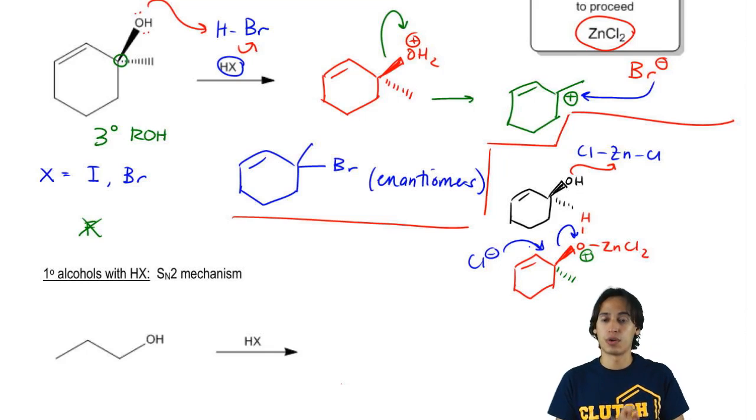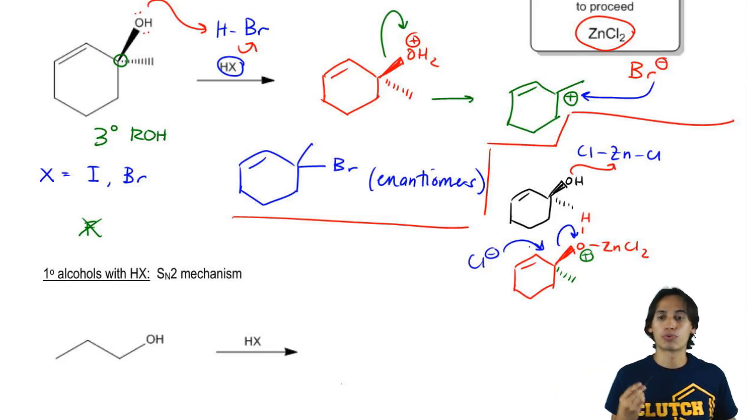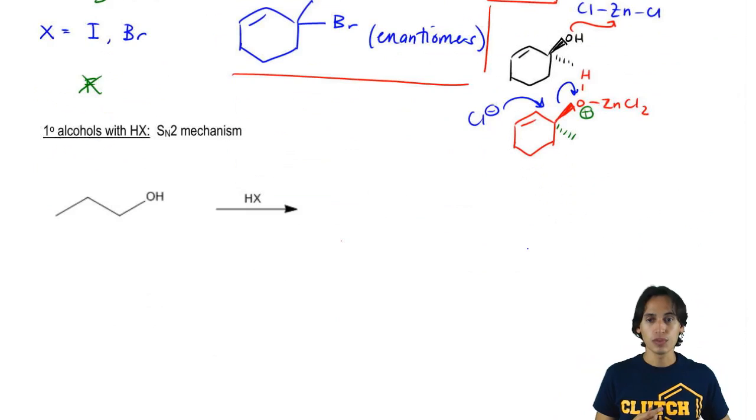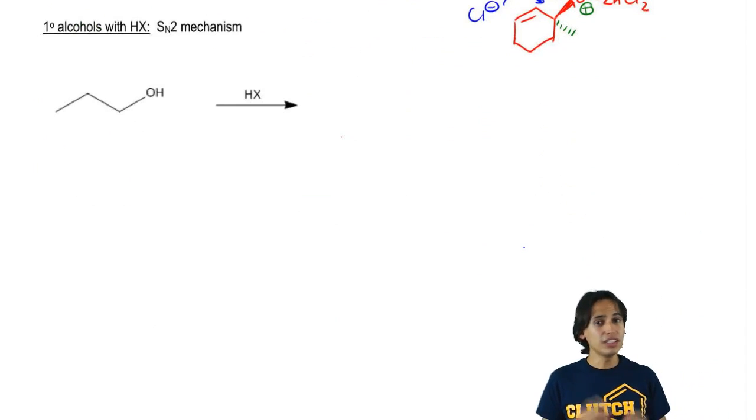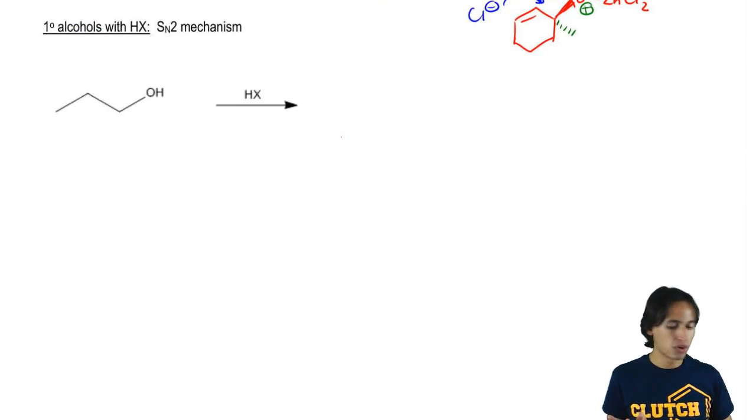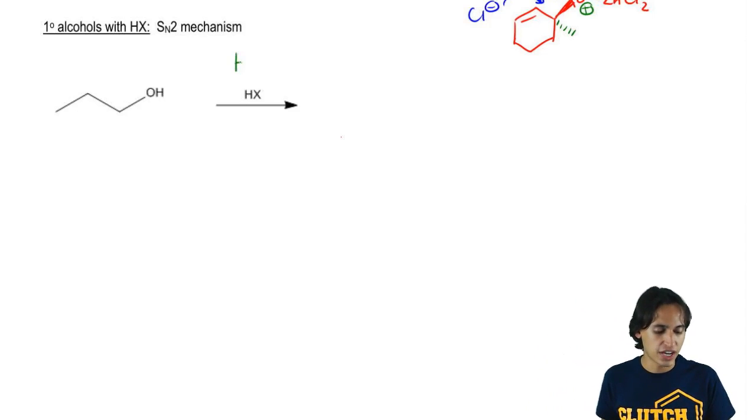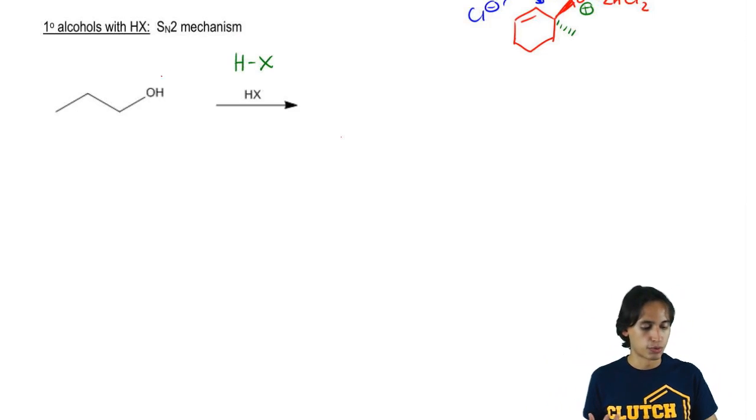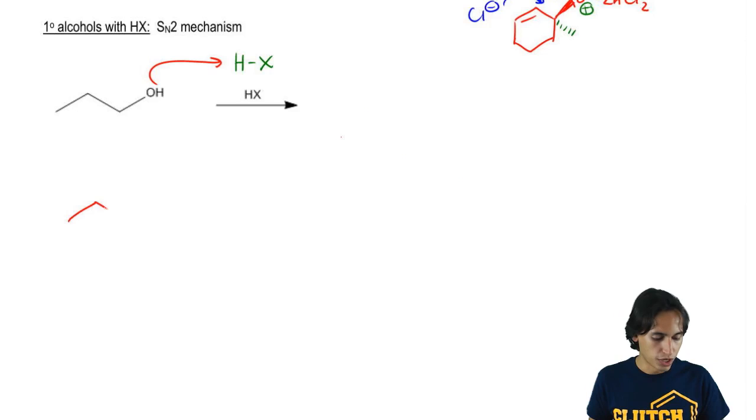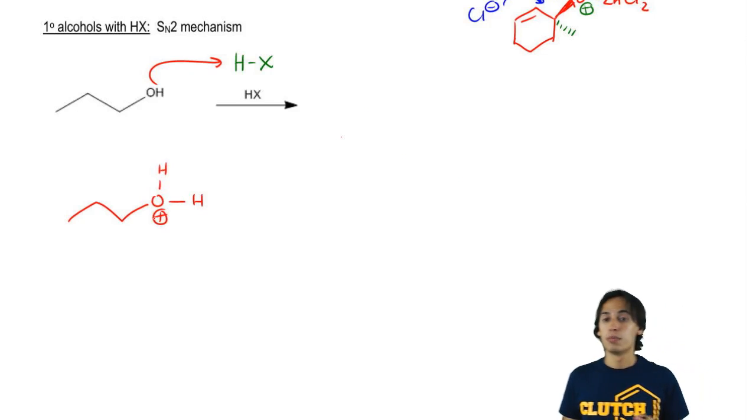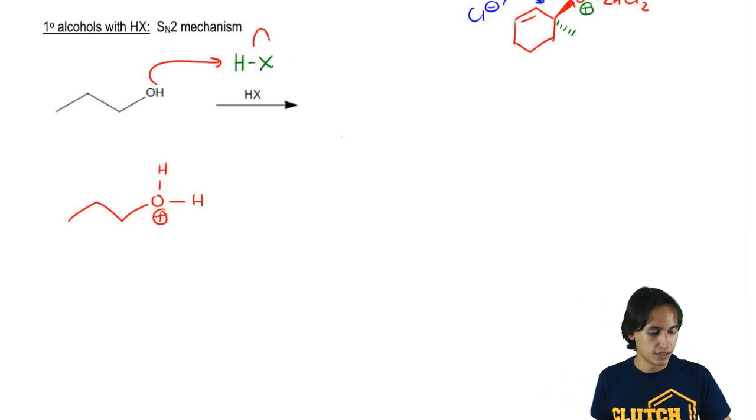So that's the first situation I want to tell you guys about. What about a primary alcohol? Well, if we have a primary alcohol, then the only thing that really changes is the mechanism. Primary alcohols are really good at having a backside and they're really bad at making carbocations. So that means if I use HX, once again, I'm going to protonate in my first step. So what I'm going to wind up getting is OH, H positive. But if this left by itself and then obviously I would get the X leaving by itself so I'd get plus X negative.